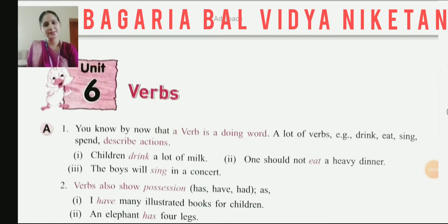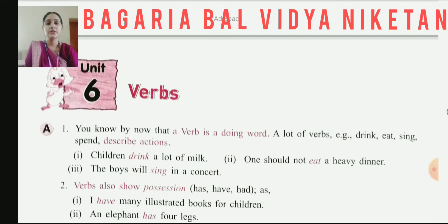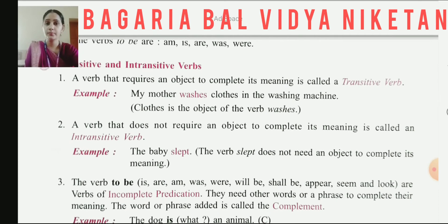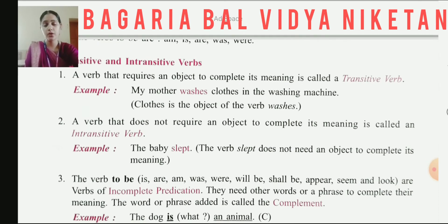Hello students, welcome to BBVN Online Classes. In our previous video session we were learning what is a verb and what are the different kinds of verbs. This is the sixth chapter of your grammar book on verbs. We have read about what is a verb — action words are called verbs — and we have read about kinds of verbs: thinking verbs, saying verbs, action verbs, and having verbs.